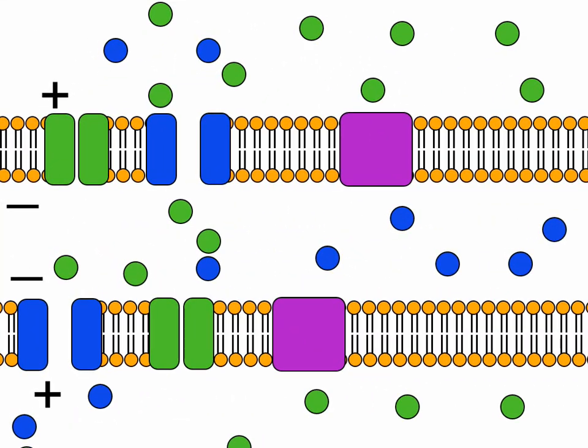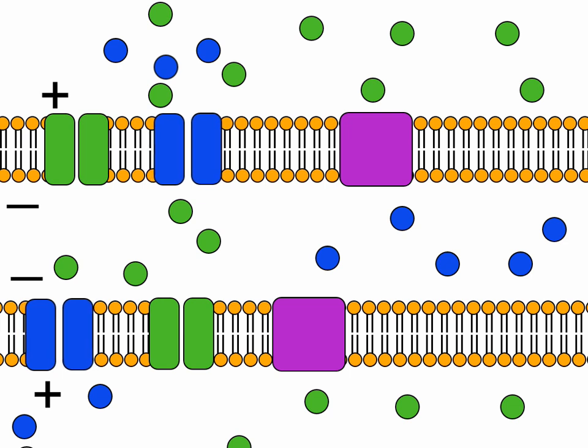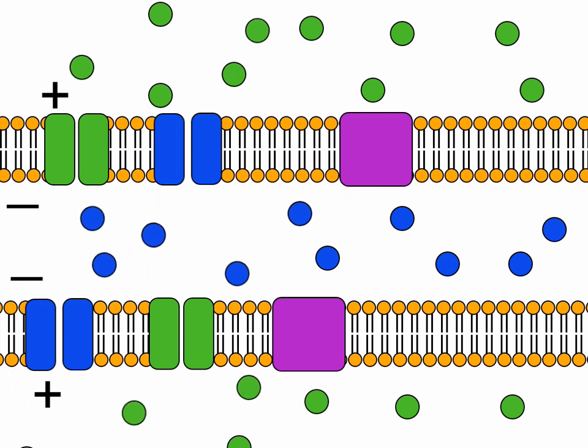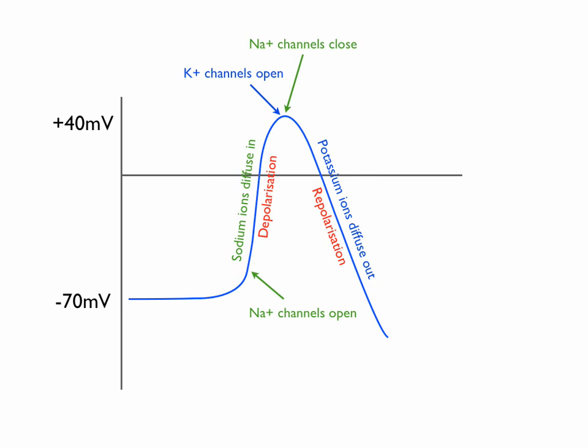Potassium channels open and close very slowly, meaning that too much potassium diffuses out, resulting in hyperpolarization. This is then corrected because sodium and potassium leak through the membrane. This is by diffusion with their concentration gradient. The sodium-potassium pump also helps. This brings the membrane potential back up to the resting potential. And you can see this in the graph too.